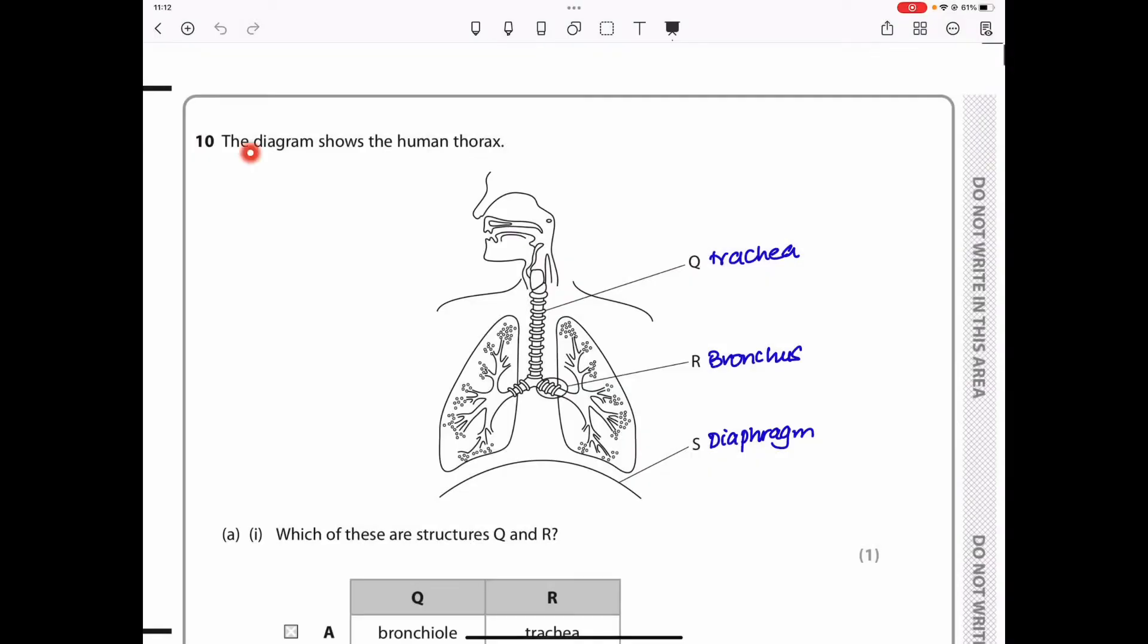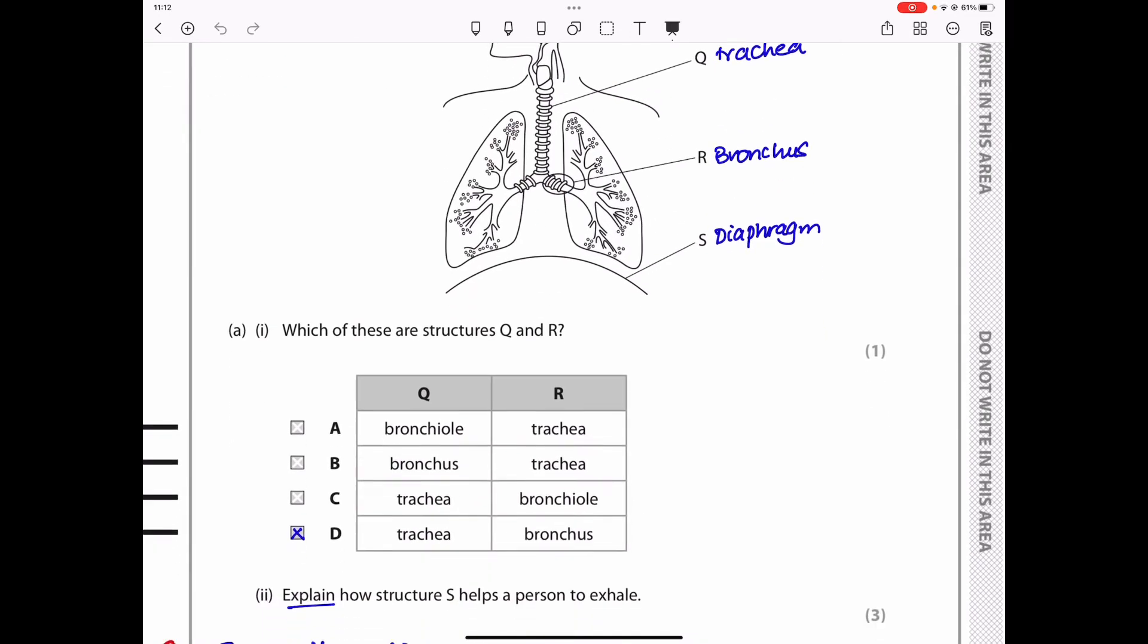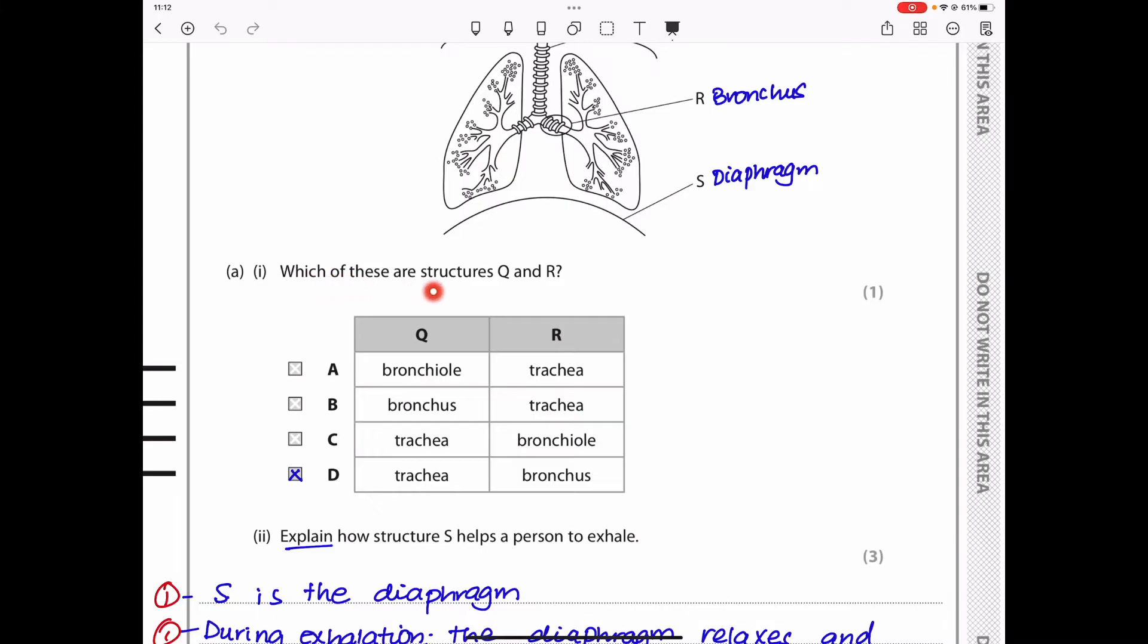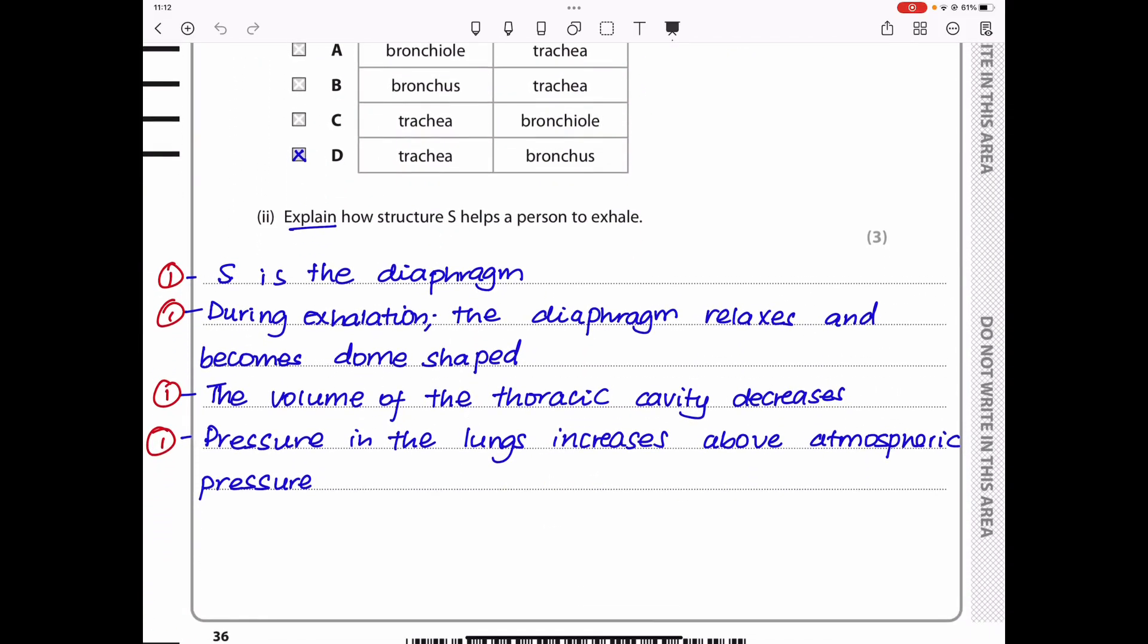Question 10. The diagram shows the human thorax. Here the structure labeled Q is the trachea, R is the bronchus, and S is the diaphragm. Which of these are structures Q and R? Since I've already labeled Q is the trachea and R is the bronchus, the correct answer here should be D.